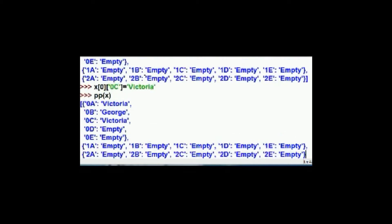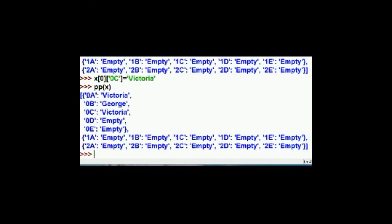We now have a problem. Victoria is in two places. What do I got to do with this? That's right. I'm going to change that to empty. I'll copy the word empty there. Paste it there. Change that to A. So the 0th row's 0A key is going to now say empty.